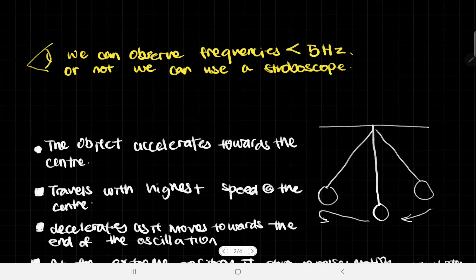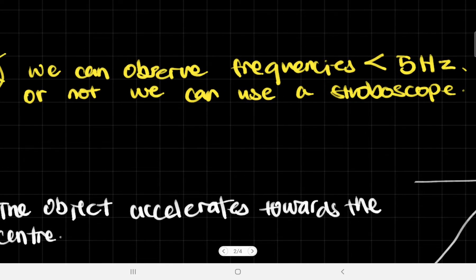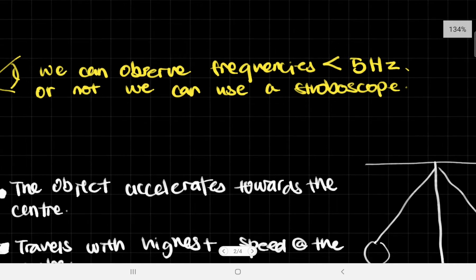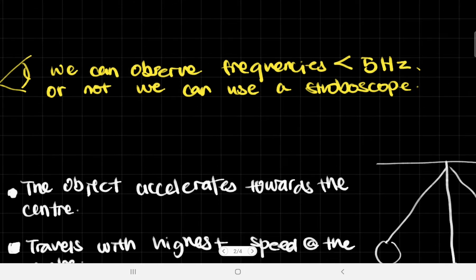We can observe frequencies of oscillations that are smaller than 5 hertz, meaning up to 5 oscillations per second. If it goes faster than that, we will probably only see it as a sort of blur. So if you want to observe something oscillating at a frequency higher than 5 hertz, we can use a stroboscope.